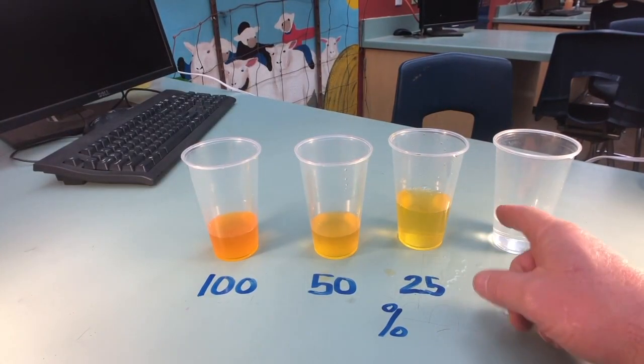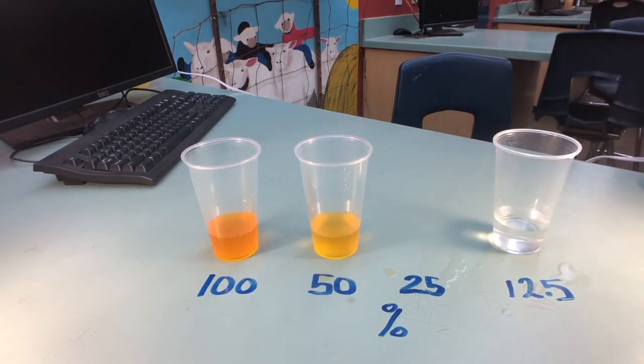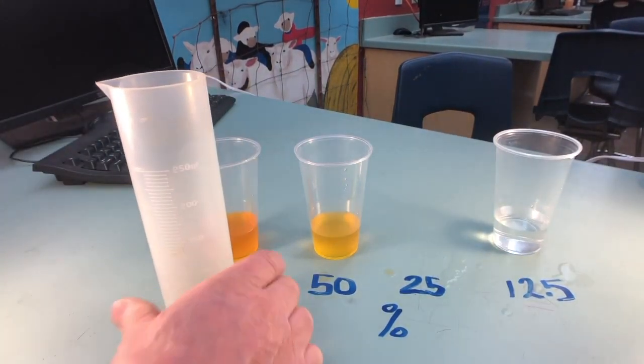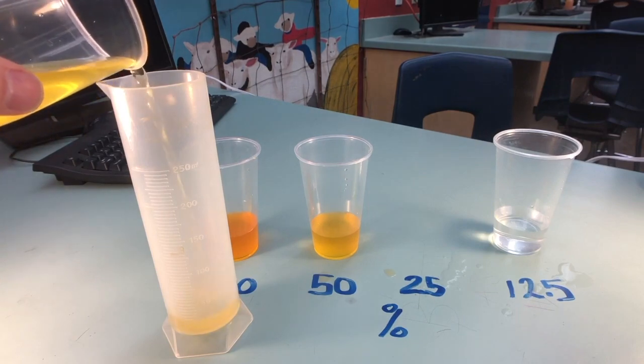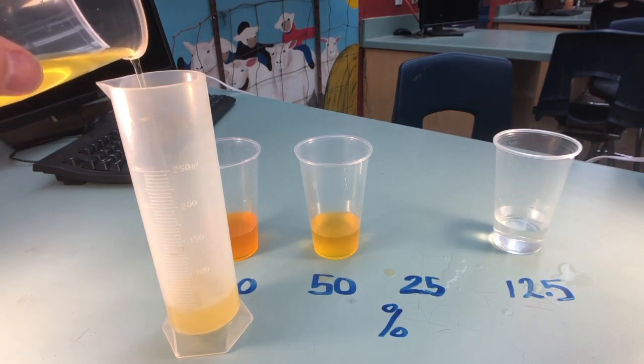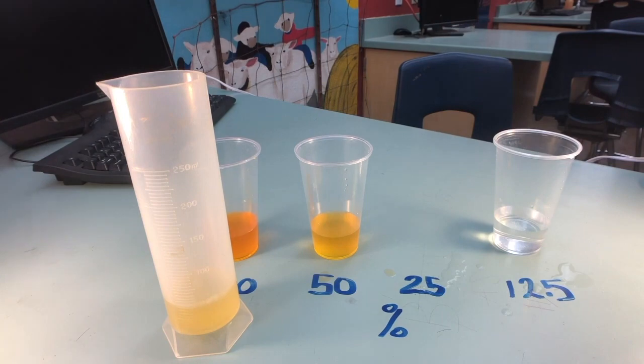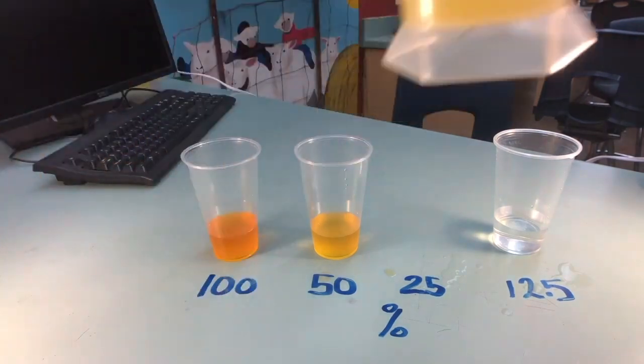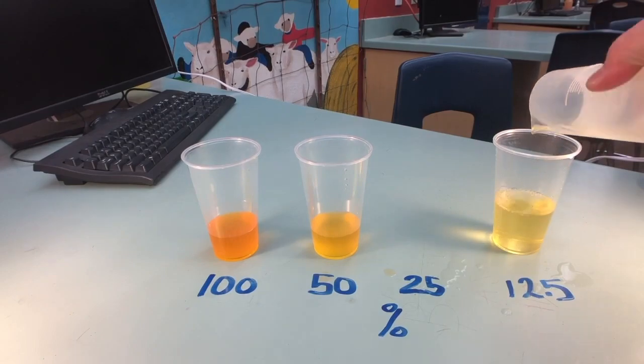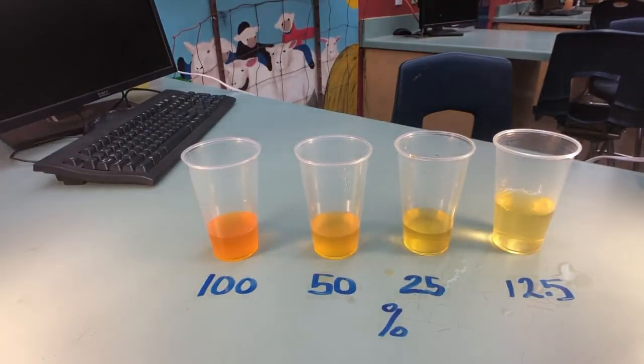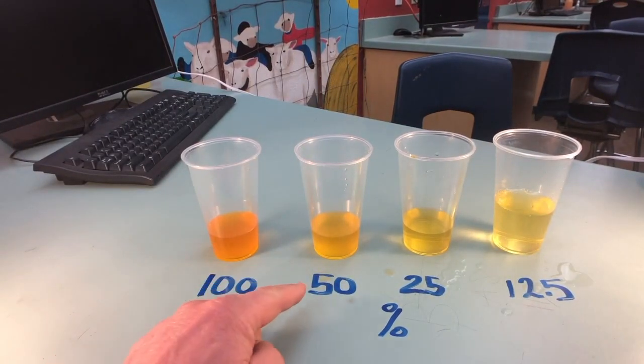And then once we have that done, we're going to take 50 ml's of that and then pour that in the 12.5% cup. So again, carefully measuring 50 ml's. As we do that, we're going to go ahead and give it a little swish. And then we're going to put it in the 12.5% cup, which now has 12.5% solution of salt.